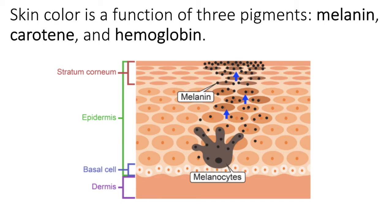UV light is present in our environment and UV light can damage the DNA of cells. Melanin protects the cells from DNA damage, and DNA damage is what ultimately leads to cancer in many cell types.